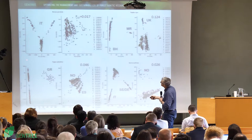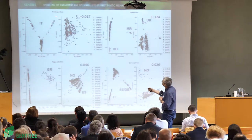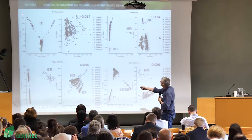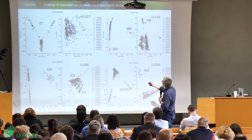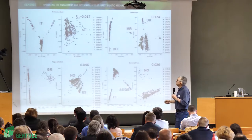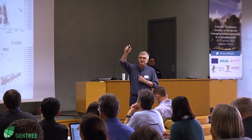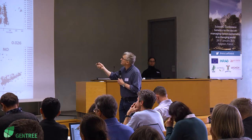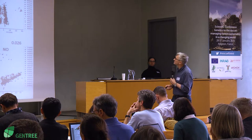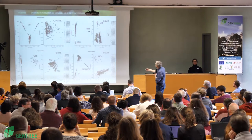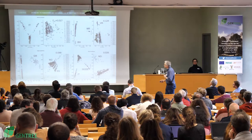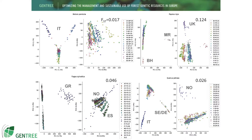Looking at PCAs, in Betula pendula the two Italian populations are distinct from the European populations, and PC3 and PC4 show a north-south gradient. Populus nigra shows Bosnia, Morocco, and the UK separating out. Fagus sylvatica shows Greece standing out on PC1 and PC2, with Spain and Norway also distinguishable. The same pattern holds in Quercus petraea — all showing evidence of interpretable population structure.